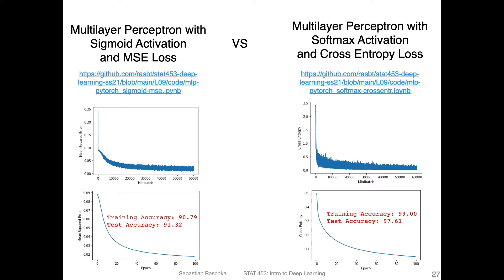In these code notebooks, I implemented a multi-layer perceptron with a sigmoid activation and a mean squared error loss, and the same multi-layer perceptron but with softmax activation and cross-entropy loss.